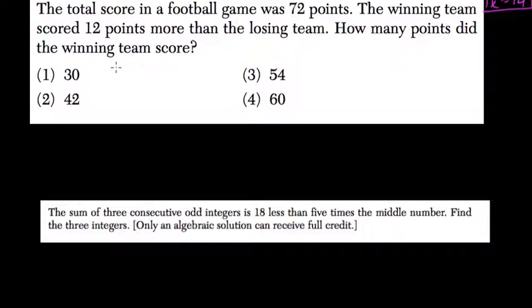Alright, so the total score from both teams, x plus y, equals 72 points. Let's say the winning team is x. You have to set these variables equal to something here. And the losing team will be equal to y.